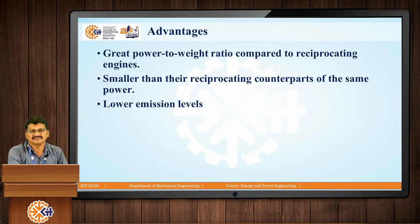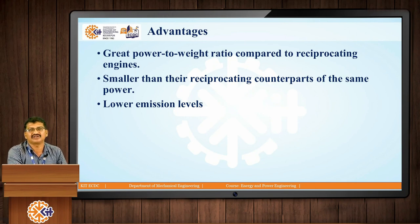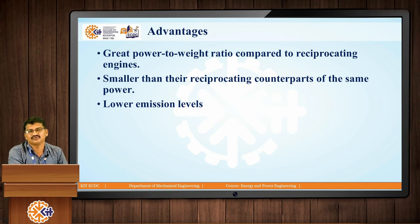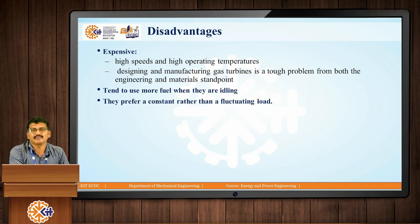What are the advantages? The gas turbine has a great power-to-weight ratio compared to reciprocating engines — it gives more power relative to its weight. It is also smaller than reciprocating counterparts of the same power output. Additionally, it has lower emission levels compared to other thermal power plants.